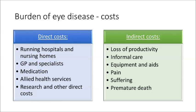Let's take a look at the costs associated with the burden of eye disease. The burden of eye disease is very closely linked with costs associated with the disease or the resultant vision impairment. The iResearch Australia Clear Insight report defines the costs as being either direct or indirect — direct in the blue box, indirect in the green. Direct costs are things like costs of running hospitals and nursing homes, the cost of the building, the cost of care, staffing, consumables and so on.